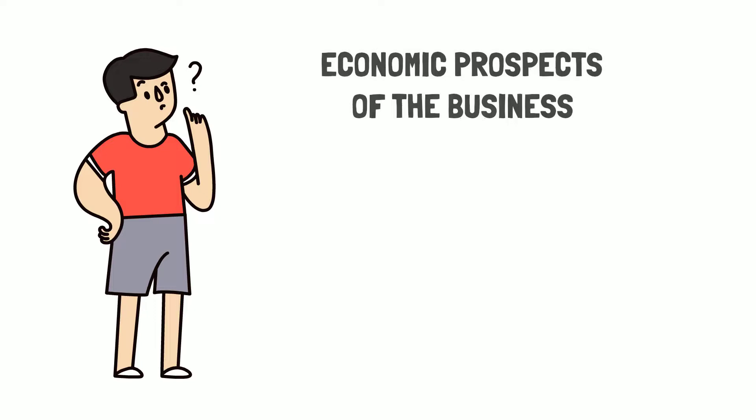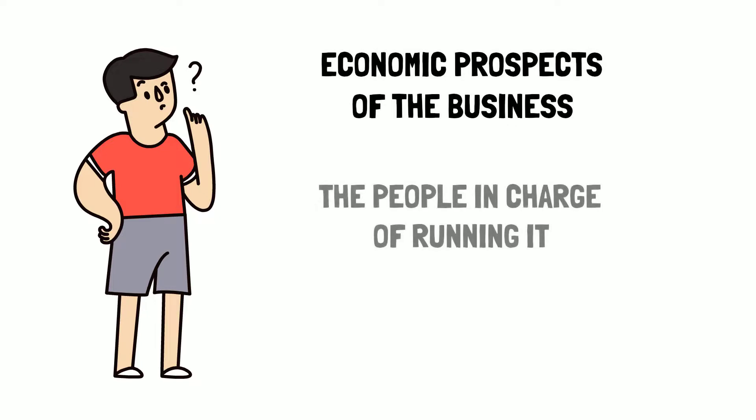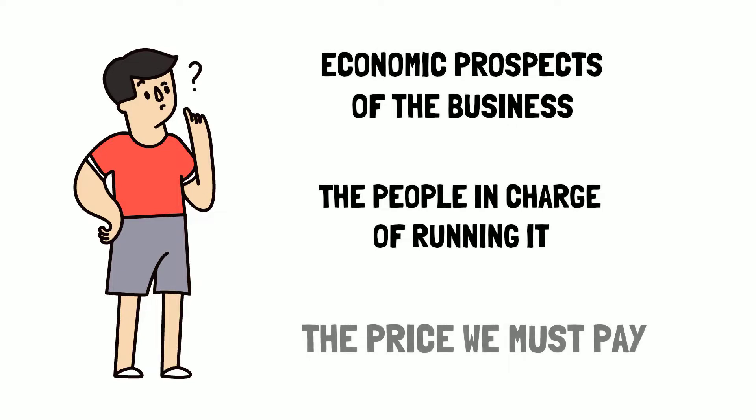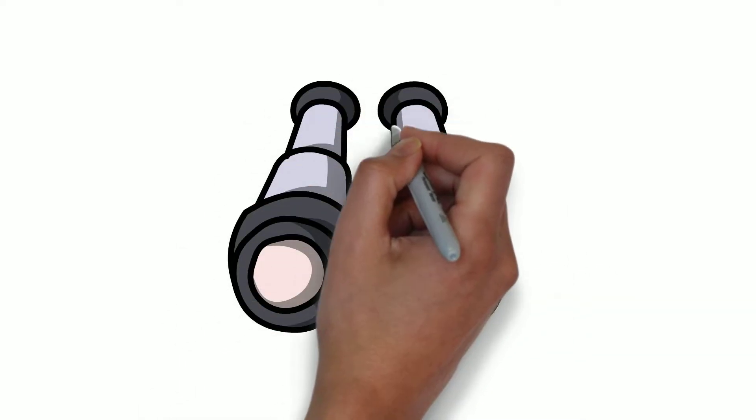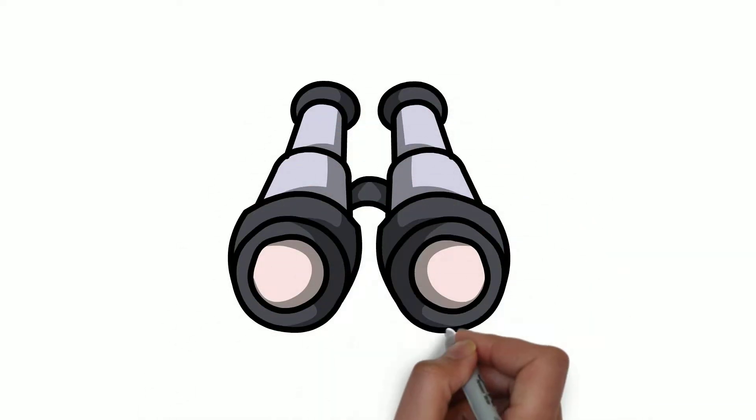We look at the economic prospects of the business, the people in charge of running it, and the price we must pay. We do not have in mind any time or price for sale. Speculators are not focused on what an asset will produce, but rather on what the next fellow will pay for it. That is not the game Warren Buffett plays.